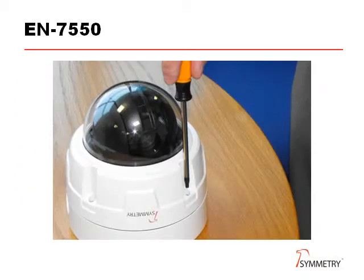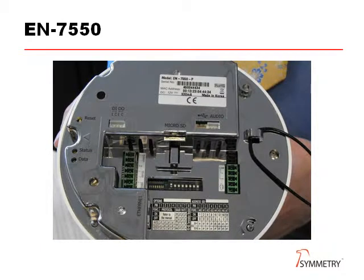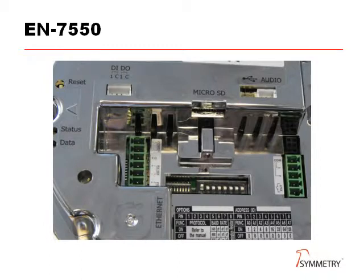The camera is removed from the base using the special screwdriver supplied in the box. The camera itself is a sealed module, so there is no access to the lens. All connections are accessible on the rear of the camera, including status LEDs and micro SD slot.